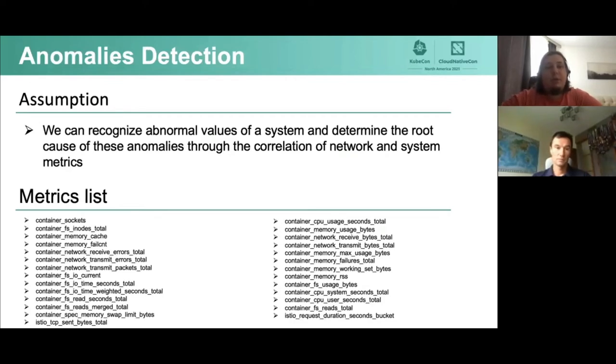Let's talk about anomaly detection. We have a large set of metrics here, and these metrics can be analyzed to find anomalies in them. Here's an assumption: we can recognize abnormal values of a system and determine the root cause of these anomalies through the correlation of network and system metrics. Let's see how it can be done.